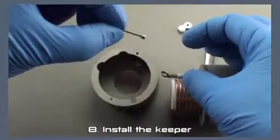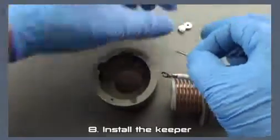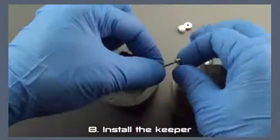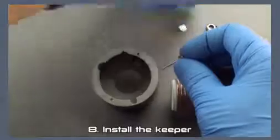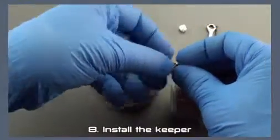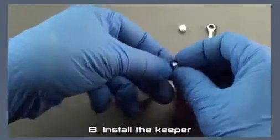Start with a lock washer. Thread the screw through the lug. Add the cup, then the male insulator.